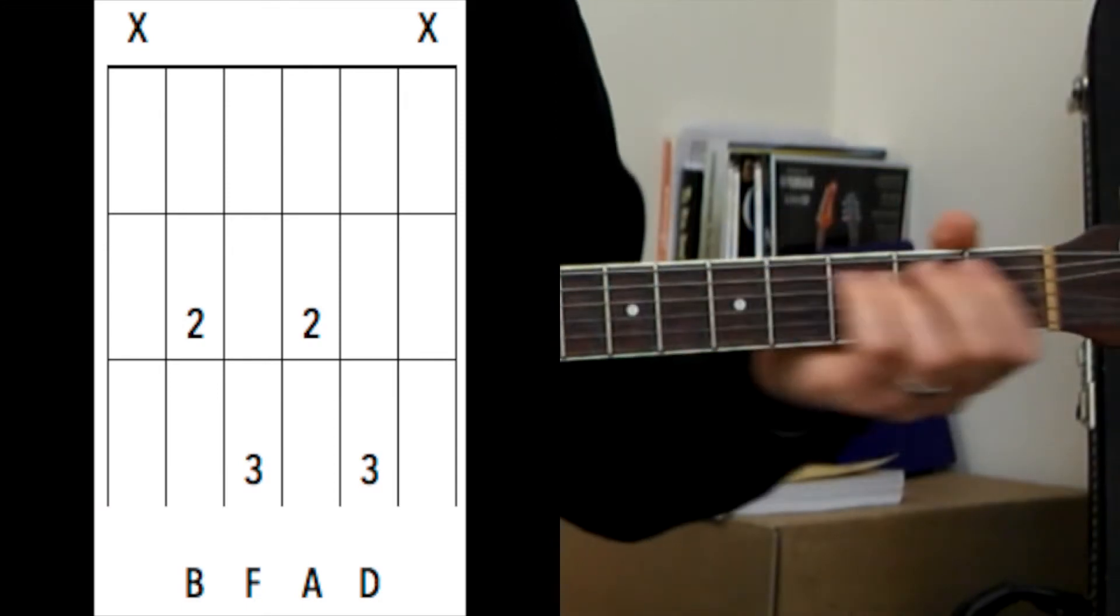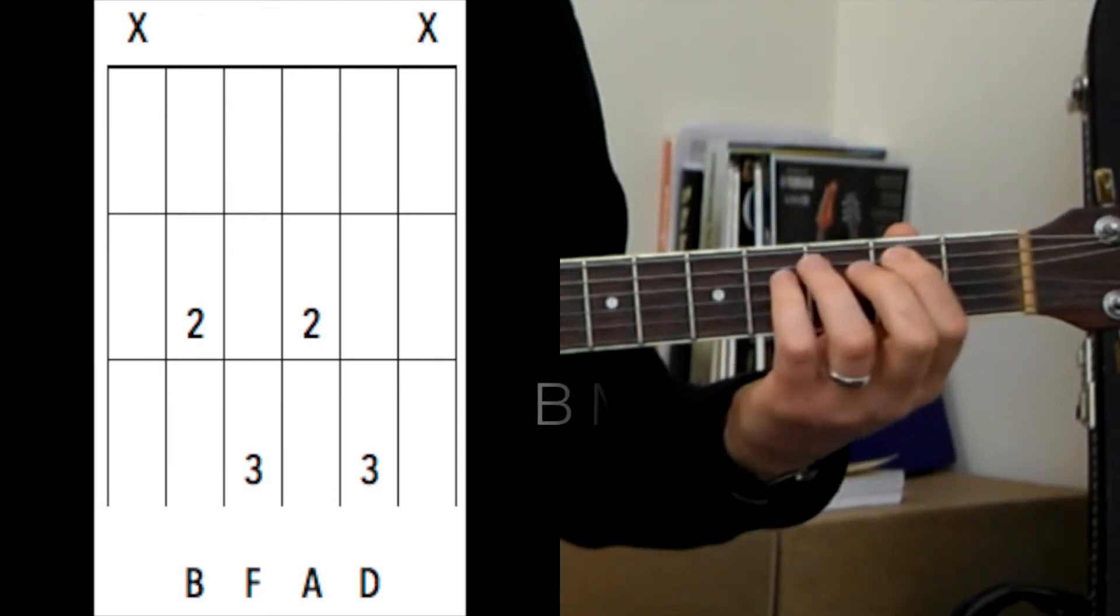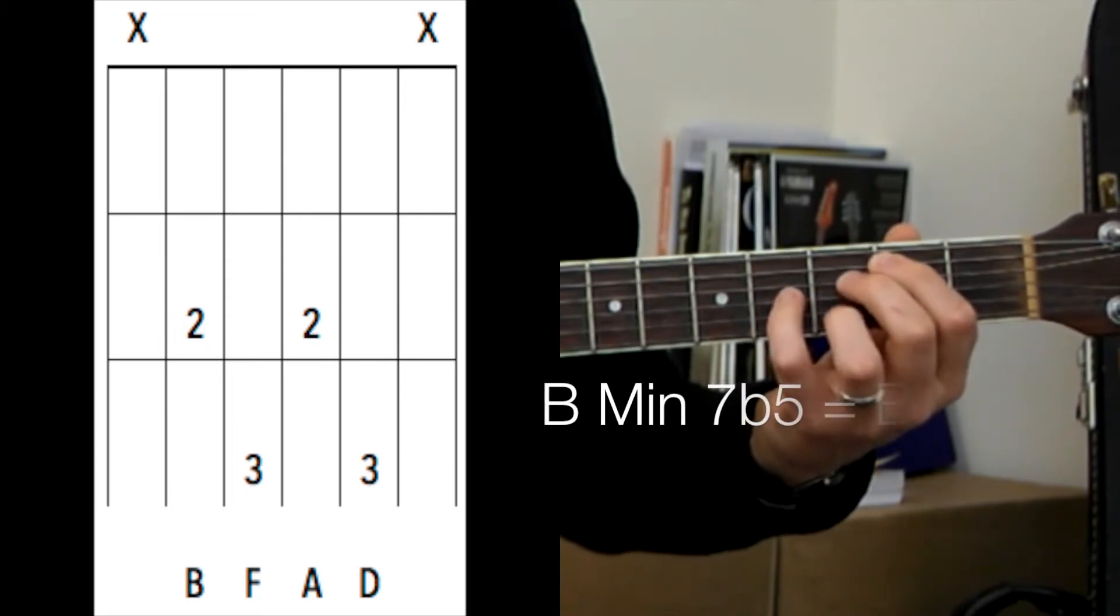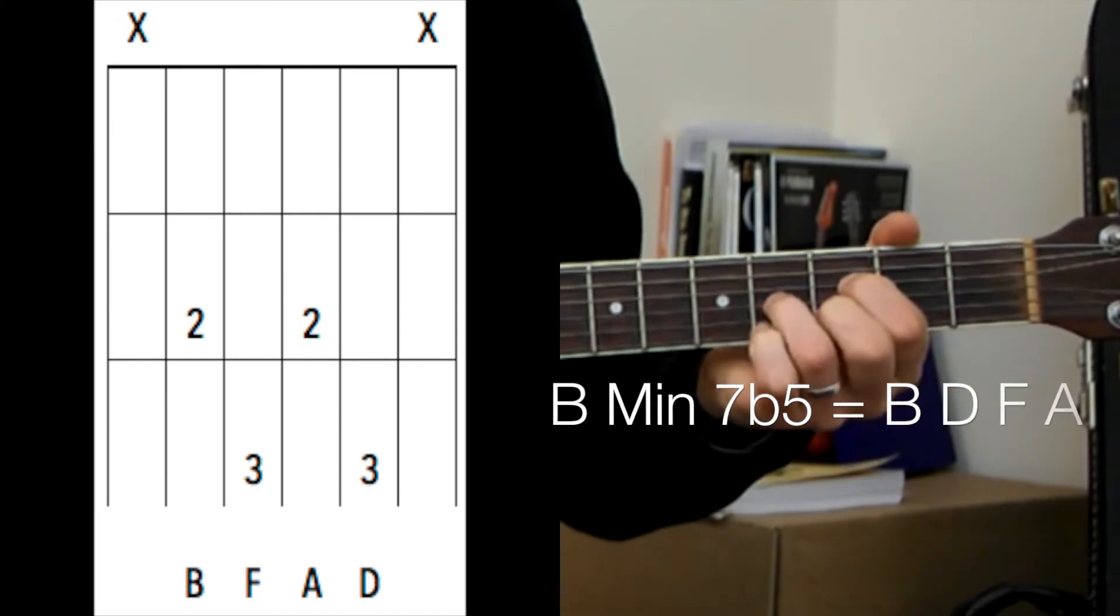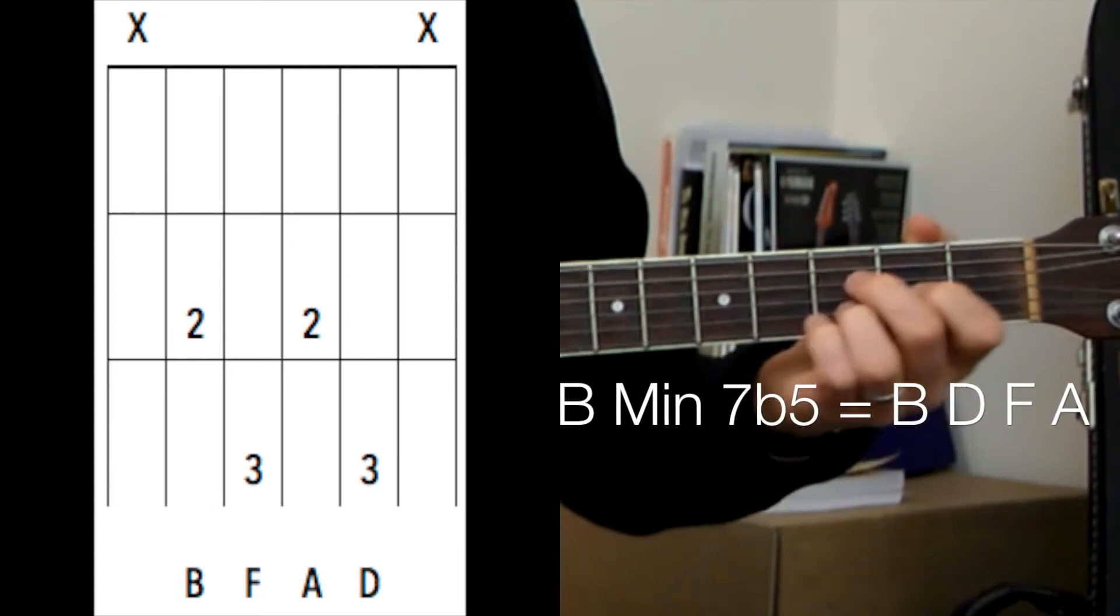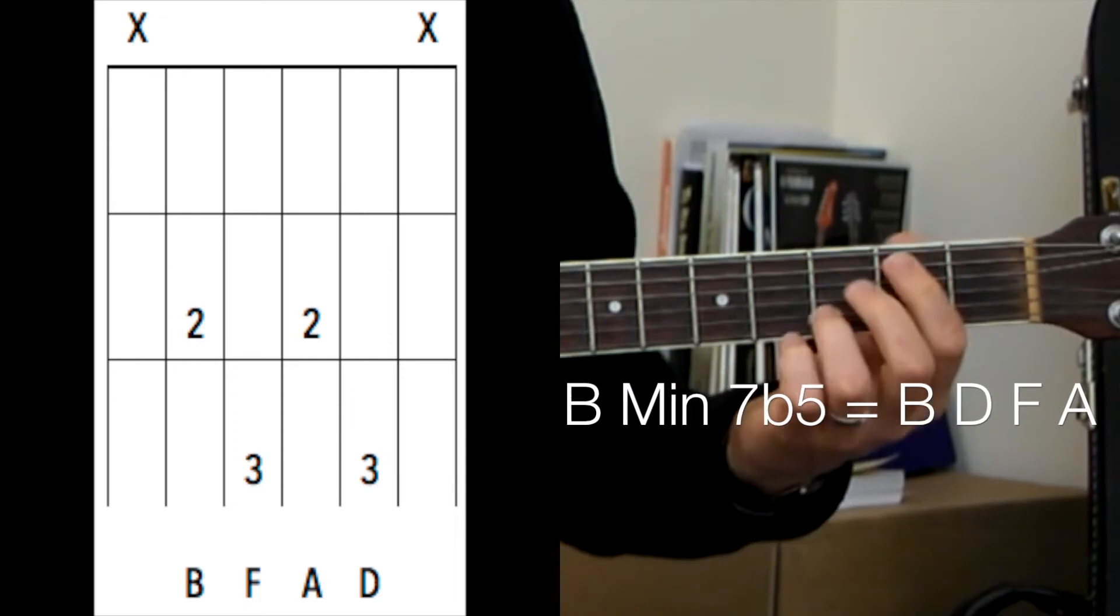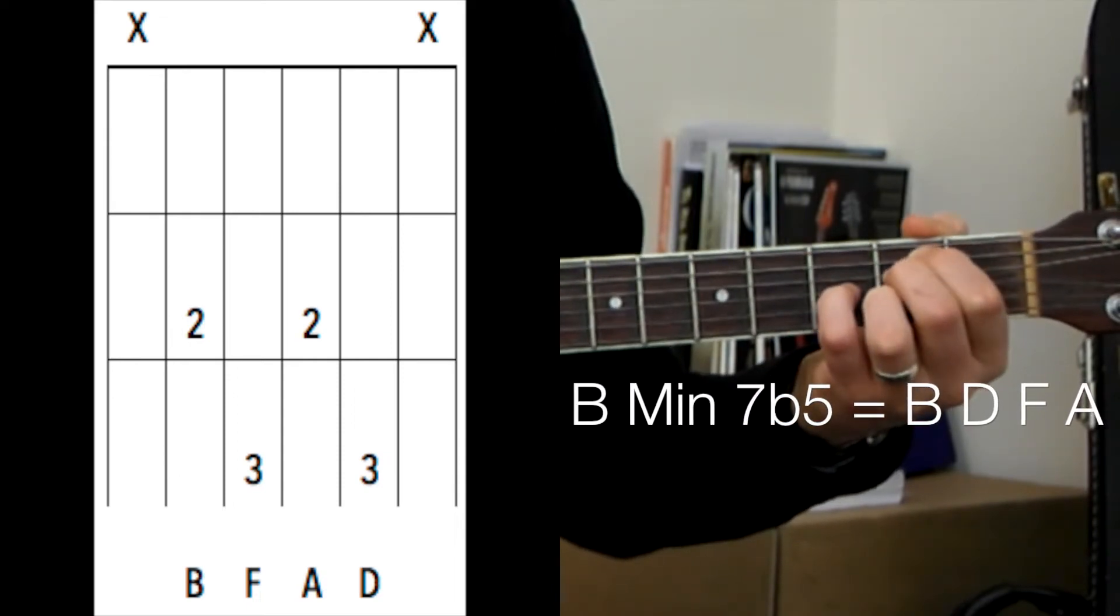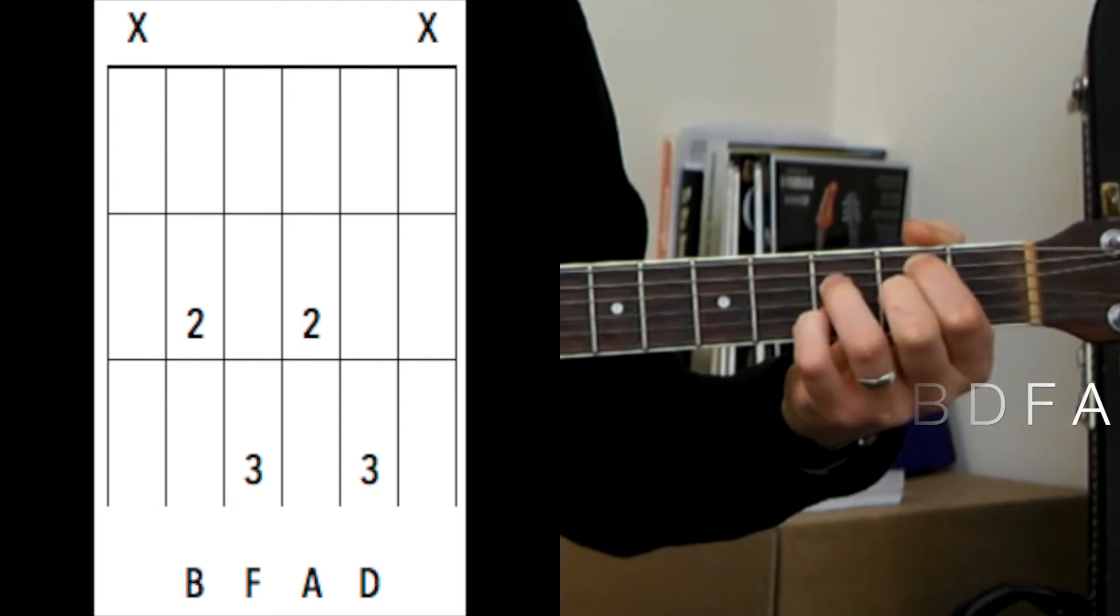And then you can do a B minor 7 flat 5, which is your B. So before we were playing this D shape like this, you can actually play the D7 shape, but just one set of strings up, like that. But just add the B in here, so you've got it a bit like this. That's it.